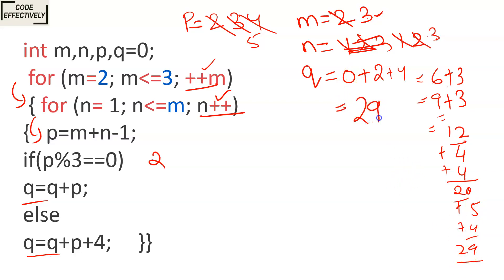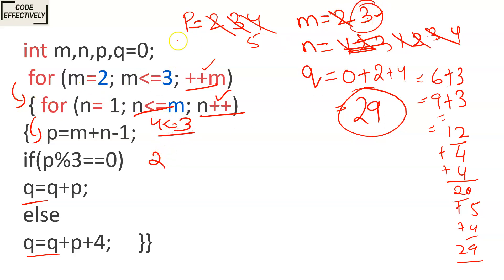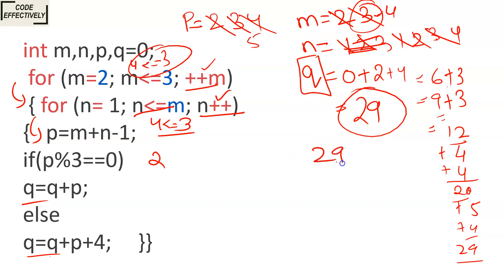Q is now 29. N increments to 4 — 4 is not less than or equal to M (which is 3), condition false, inner loop exits. M increments to 4 — 4 is not less than or equal to 3, condition false. All loops terminate. The final value of Q is 29. If you run this code on your laptop, mobile, or any IDE, you will get the same answer: 29.